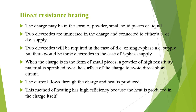The charge used may be in the form of powder, small solid pieces or liquid. The electrodes are immersed in the charge and connected to the supply — two electrodes are required for DC or single phase AC supply and three electrodes for three phase supply. When the charge is in the form of small pieces, powder of high resistivity material is sprinkled over the surface to avoid direct short circuit. The current flows through the charge and heat is produced. This method has high efficiency because the heat produced is in the charge itself.